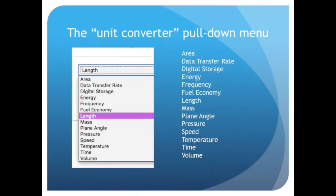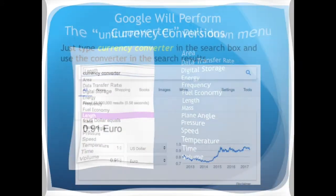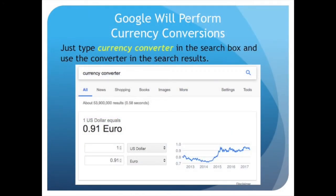The unit converter pull-down menu includes area, frequency, length, mass, speed, temperature and more. Google will also perform currency conversions — just type 'currency converter' in the search box and use the converter.